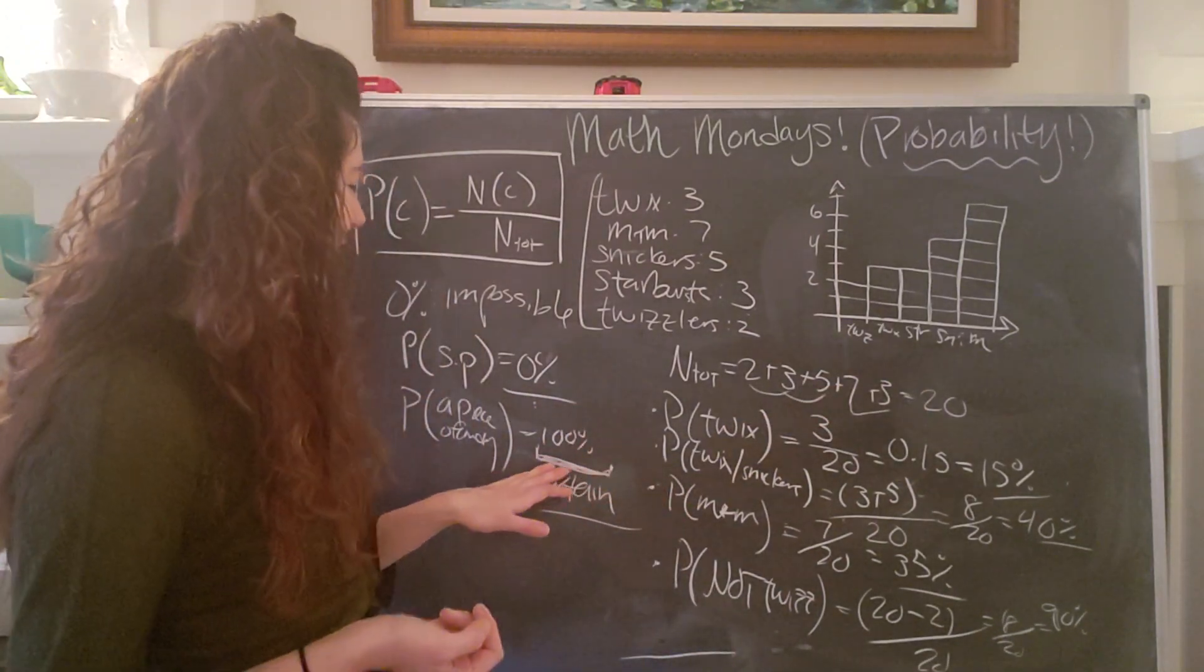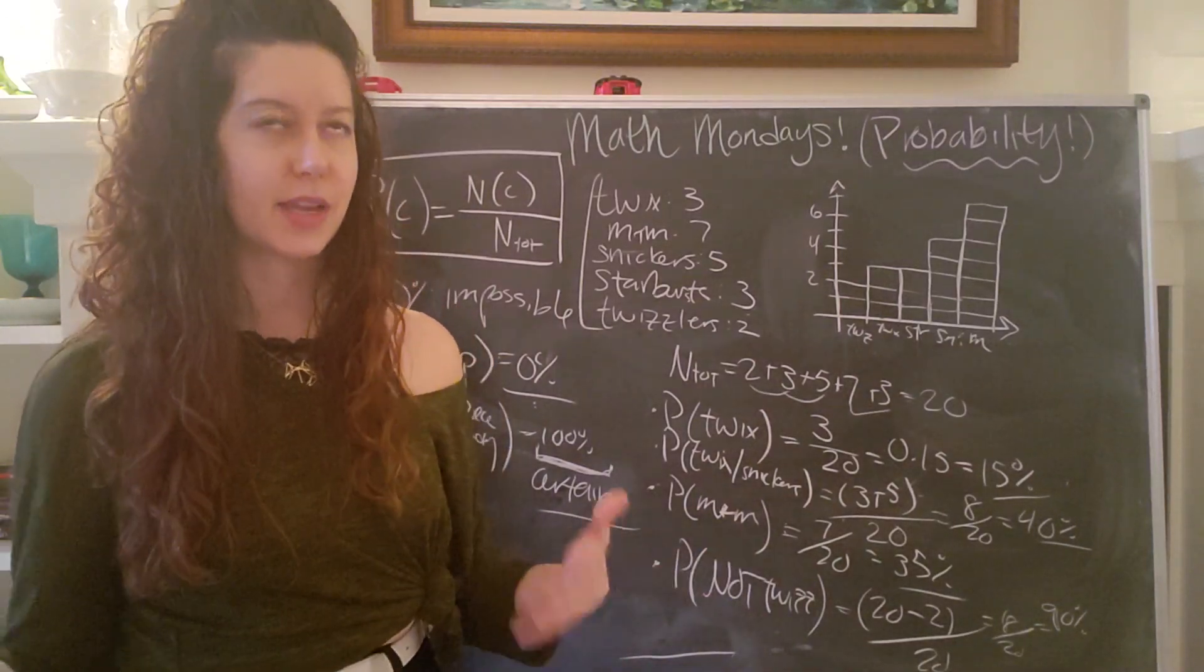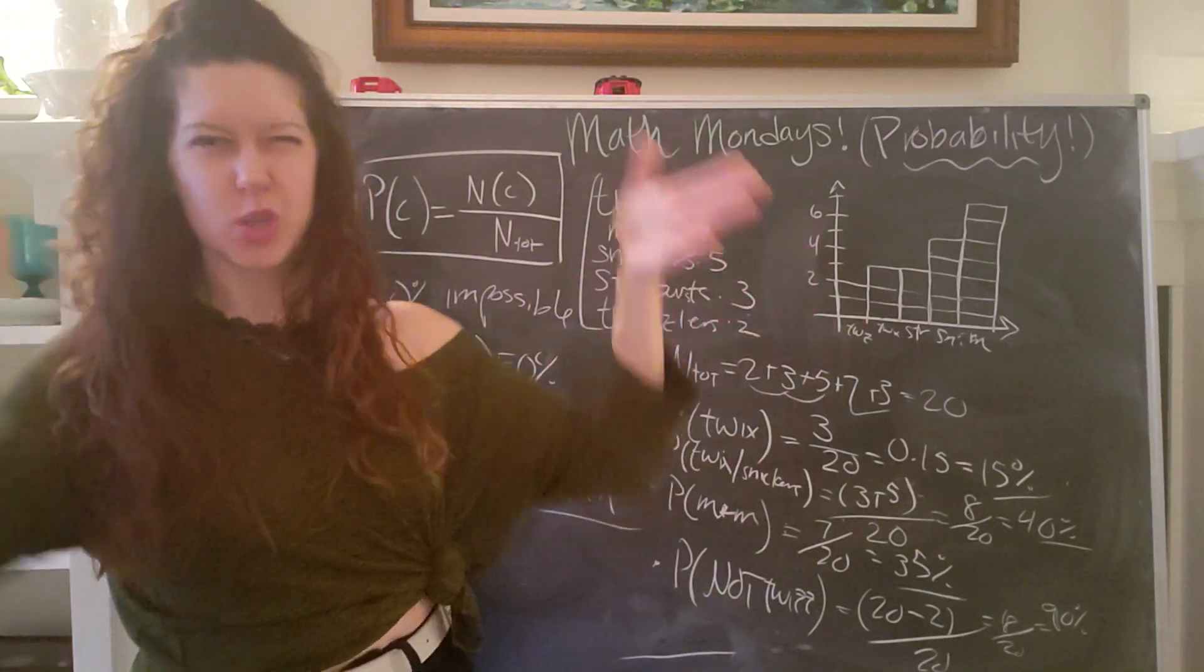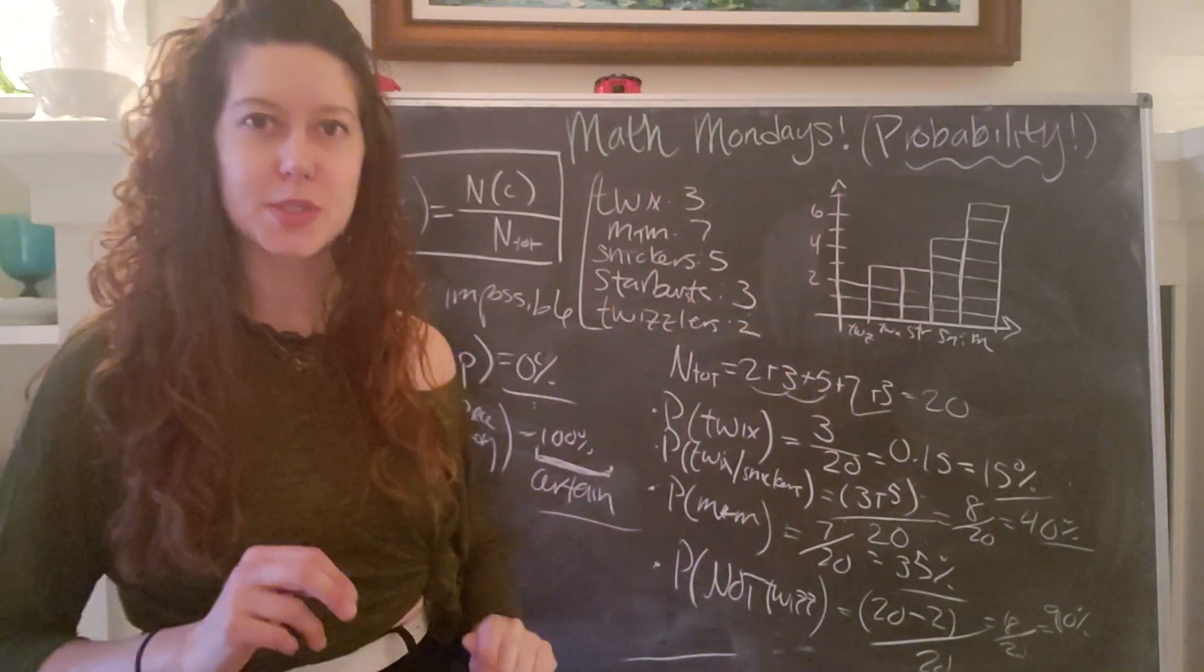Probably. Um, and we can't have anything more than a hundred percent. We can't have anything more certain than certain. So percentages put some nice bounds on our understanding of what is possible.